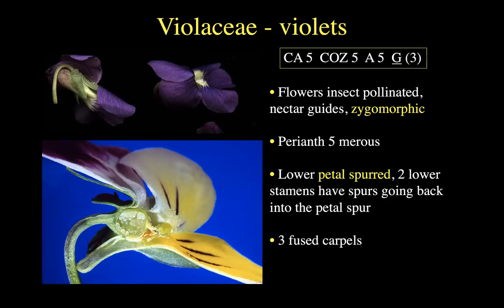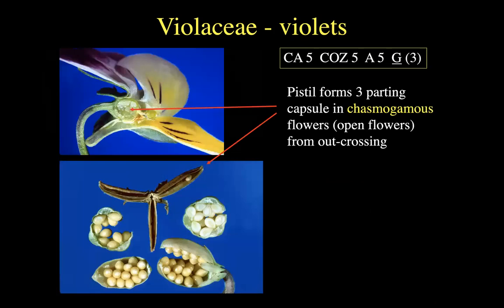This is another five-merous plant — fives, fives, and fives. Highly zygomorphic; I can't think of a single actinomorphic violet. The lowermost petal is going to be spurred — something we've seen in Ranunculaceae. The two lower stamens have spurs going back into it as well, so you have multiple layers of spurring. The gynoecium is made of three fused carpels and is superior. The mature fruit will be a capsule — dry and dehiscent, full of seeds.